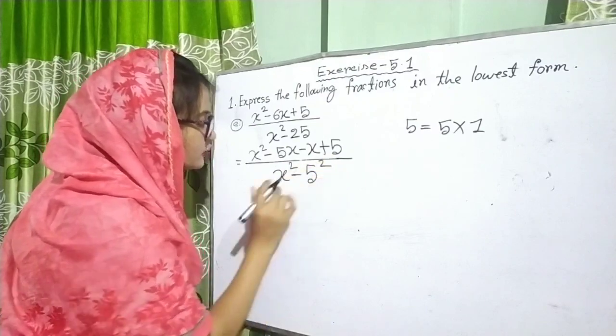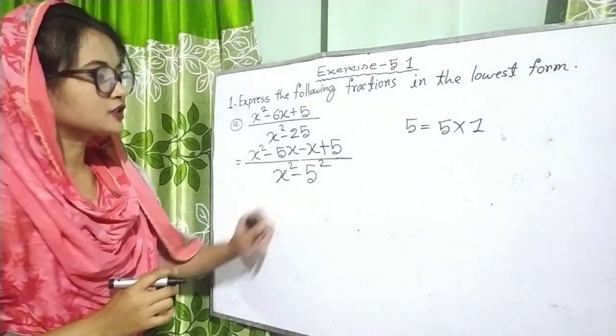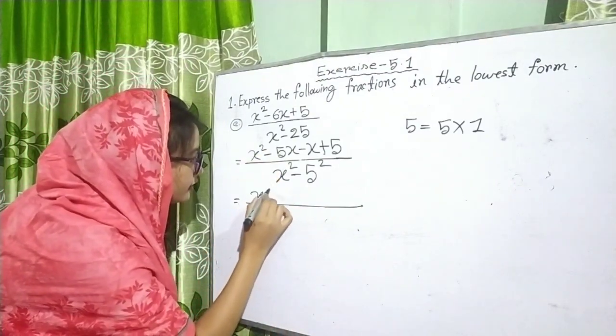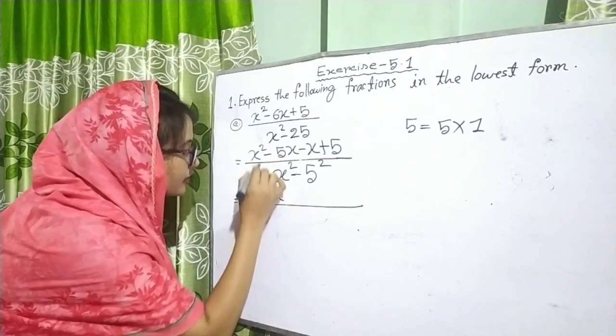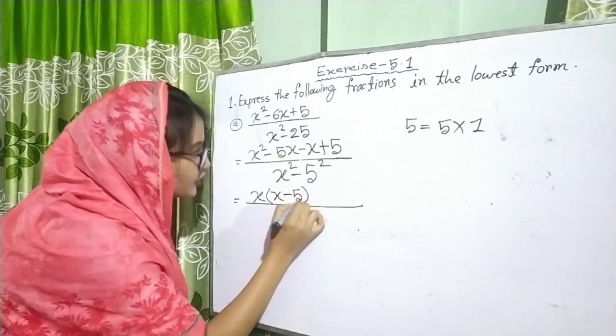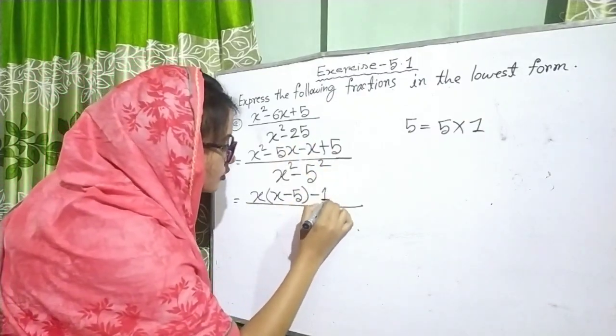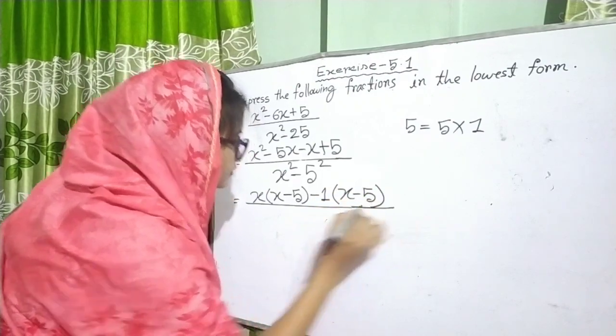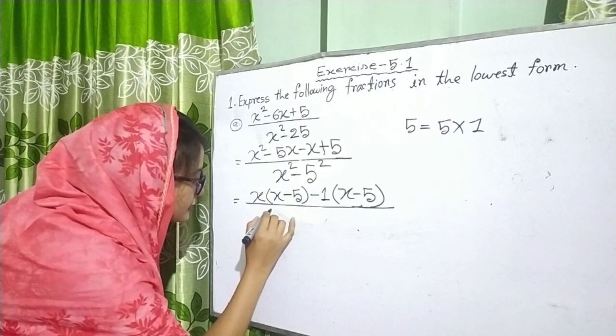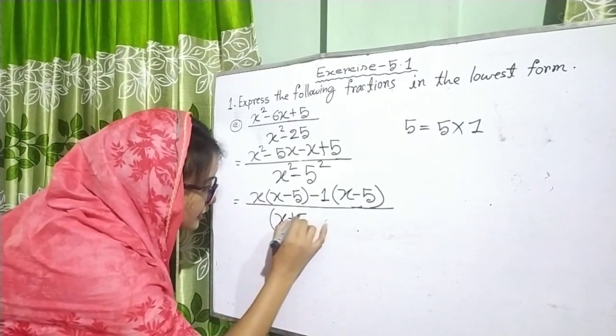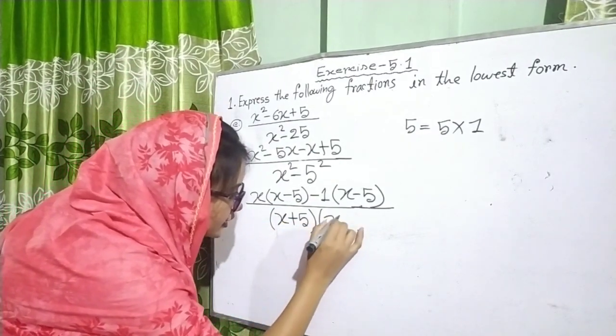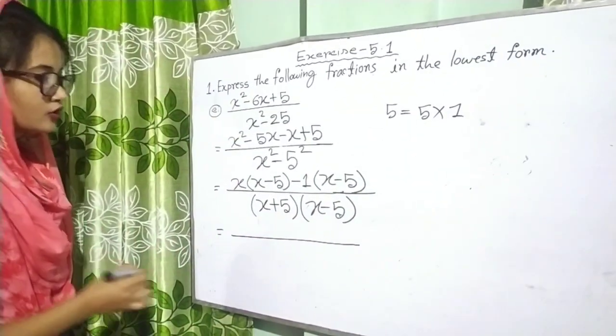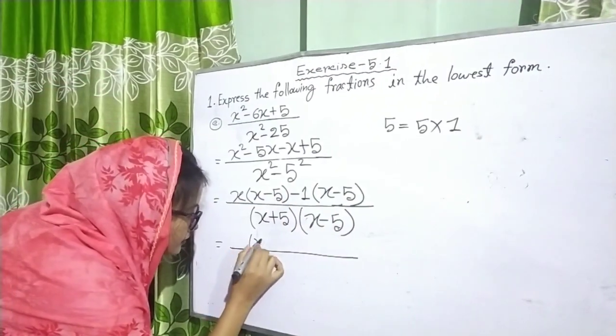x is common from here: x(x minus 5). Also here, common is minus 1: (x minus 5). And here, A plus B into A minus B, that means (x plus 5)(x minus 5) is equal to... here common is x minus 5.